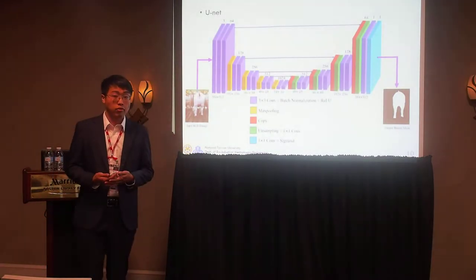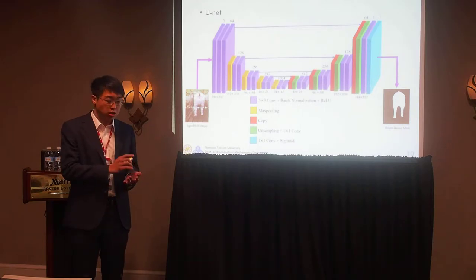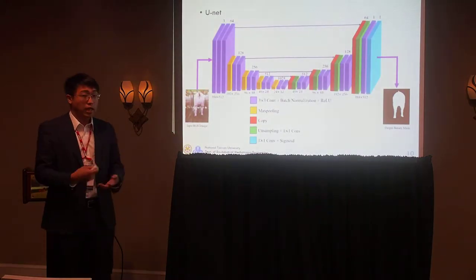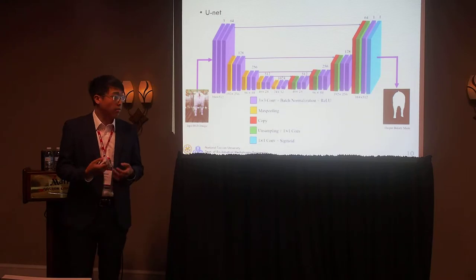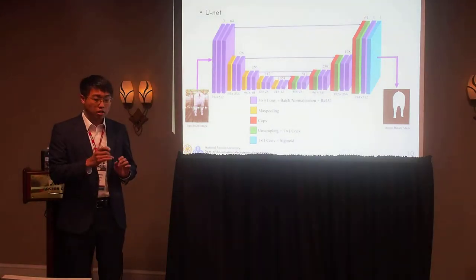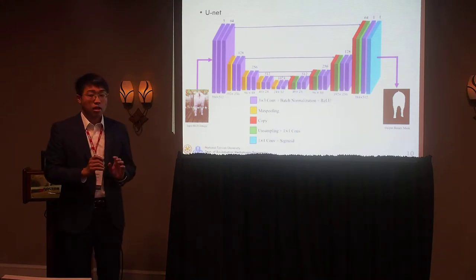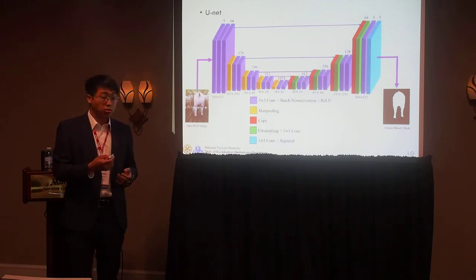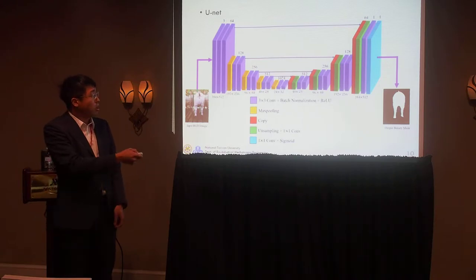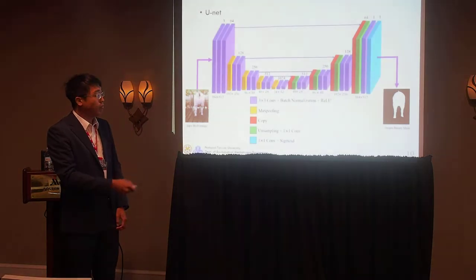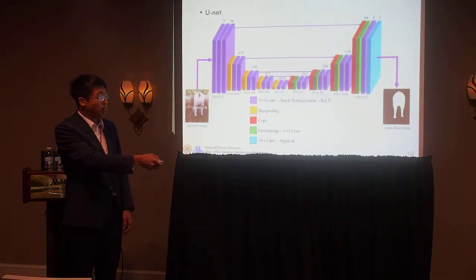This is the architecture of my fully convolutional network. It is adjusted from U-Net. My input image is resized to 384 x 512. The left part is the down-sampling part and the right part is the up-sampling part. Each block is a convolutional, batch normalization, and ReLU layer. The skip connections concatenate features from corresponding layers to ensure all features in every dimension can be captured. The output is a binary mask with a threshold.